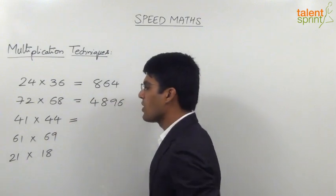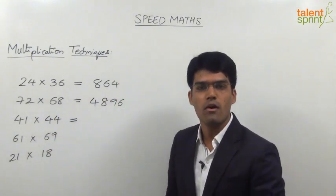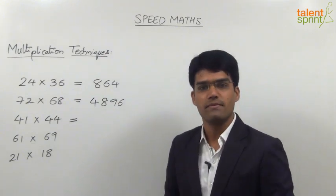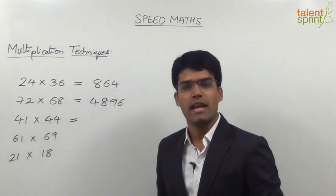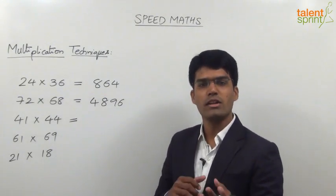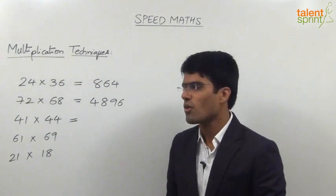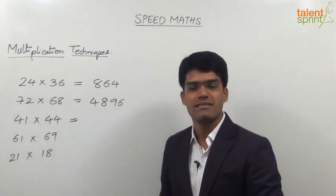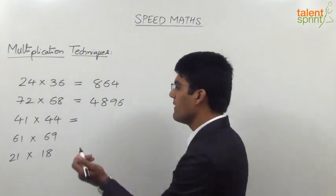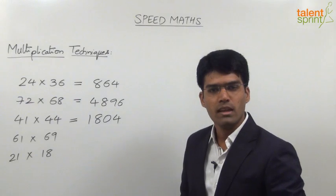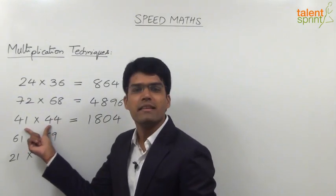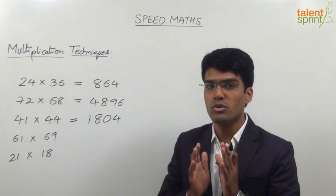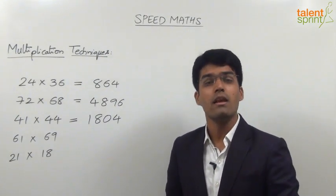The next one is 41 into 44. Now 41 into 44 cannot be taken in the form of (a + b)(a - b), so we use split and merge. Take 41 forty times and then four times: 41 × 4 = 164, so 41 × 40 = 1,640. Then 1,640 + 164 = 1,804. This question was included so you learn to decide when (a + b)(a - b) is applicable and when it is not.